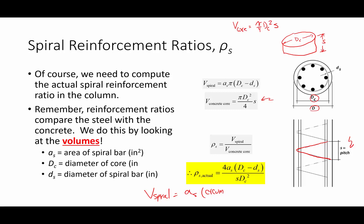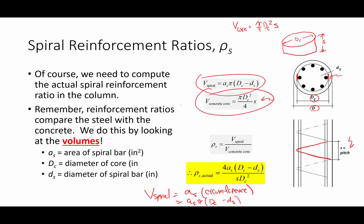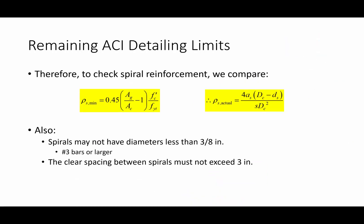We then divide the two volumes and do a little algebra to make the formula cleaner. So we just compare the minimum spiral reinforcement ratio with the actual spiral reinforcement ratio. As long as the actual is more than the minimum, we're good.